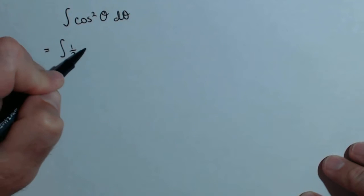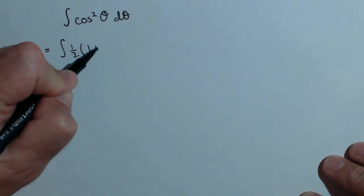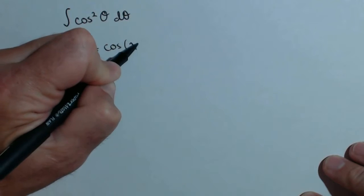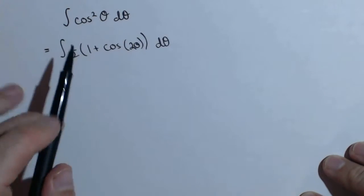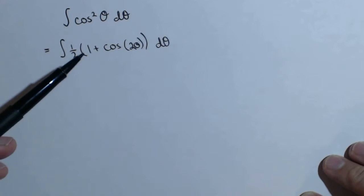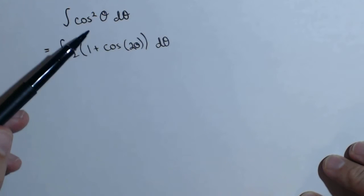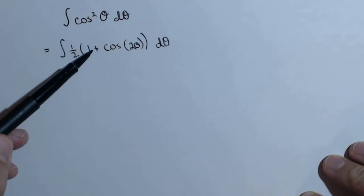That is, cosine squared equals one half times one plus cosine of two theta, d theta. This is not a u-substitution, this is not a trig substitution. We're actually using a trig identity to rewrite cosine squared.